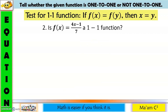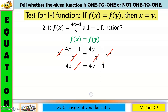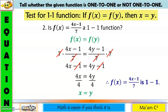Let's have another example. Is f(x) = (4x − 1)/7 a one-to-one function? Let's test. So f(x) equals f(y): (4x − 1)/7 = (4y − 1)/7. To eliminate the denominator, multiply both sides by 7. The 7s cancel, leaving 4x − 1 = 4y − 1. The negative 1s cancel, giving 4x = 4y. Dividing both sides by 4, we have x = y. Therefore, f(x) = (4x − 1)/7 is one-to-one.